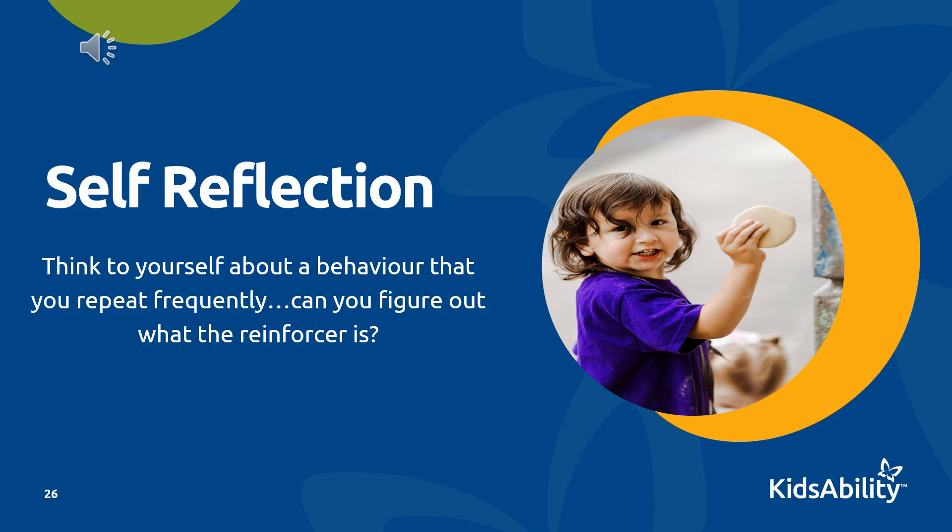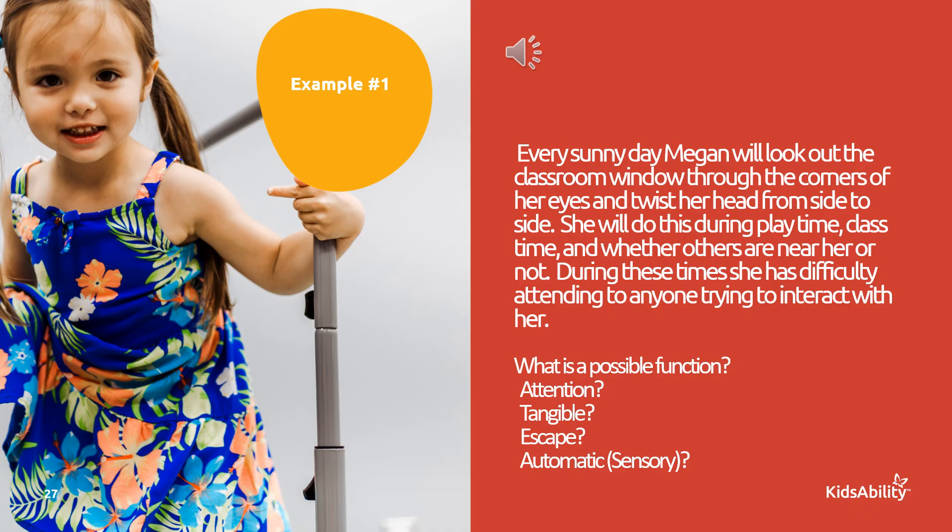Let's take a moment for some self-reflection. Think about a behavior that you yourself repeat frequently. Can you figure out what the reinforcer is? Think about why you keep engaging in this behavior. We can even use a healthy example — it could be exercise. I exercise every day because it makes me feel good. Would you continue to engage in that behavior if it stopped making you feel good? Now let's look at some examples and see if we can find the possible functions of each behavior.